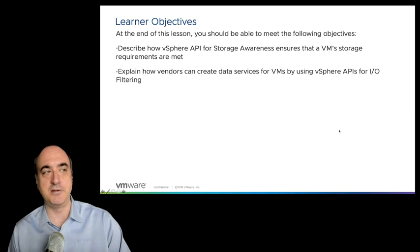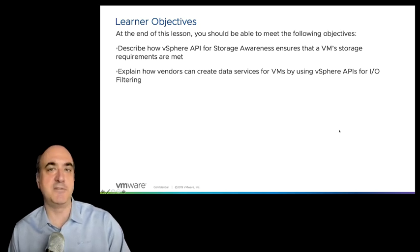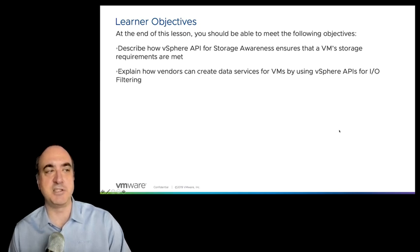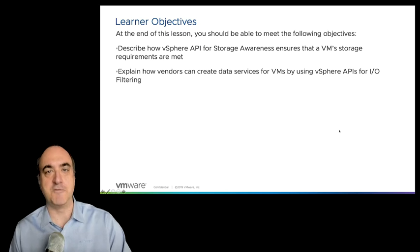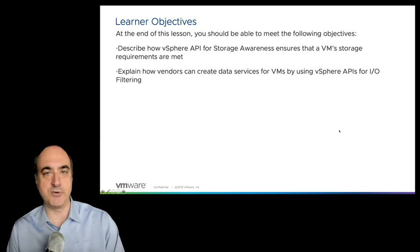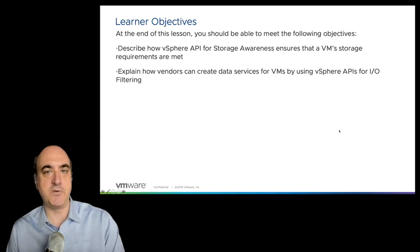So what are these? The vSphere Storage API for Storage Awareness ensures that we learn what all the capabilities are from our storage array, and also how vendors can create data services for VMs using the vSphere APIs for IO Filtering. Simply put, these are two different APIs for the storage to advertise capabilities to vSphere. It's quite different than the hardware acceleration that VAAI provides. VAAI allows the ESXi server to work with the array to offload operations. This is about information exchanging to let vSphere learn about the capabilities of the storage.